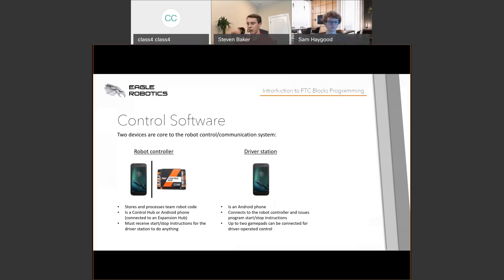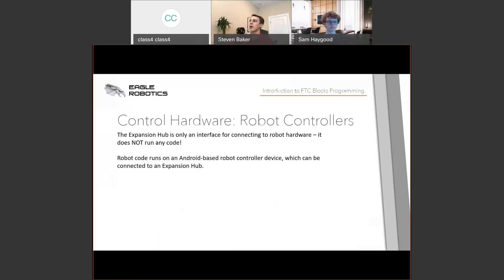The driver's station phone is a separate device connected to up to two gamepads. It's connected directly to the robot controller over a Wi-Fi connection and tells the robot controller not only gamepad inputs, but also starts and stops the program. You also have the Rev Robotics Control Hub and Expansion Hub. The Expansion Hub connects to your robot controller and allows you to connect to various robot hardware, including motors, sensors, and servos.